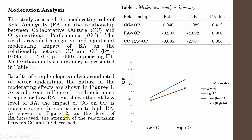As shown in Figure 2, as the level of RA — role ambiguity — is increased, the strength of the relationship between CC and OP is decreased. Whether it's low RA or high RA, the strength of the relationship between CC and OP is actually changing. So, role ambiguity is negatively moderating the relationship between collaborative culture and organizational performance.